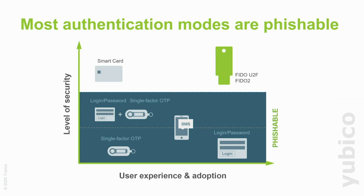From a zero-trust perspective, FIDO flips the paradigm on authentication. In previous models, the enterprise had primary responsibility for storing the credential itself. With FIDO, the private key is now held within the device — the authenticator. In this case, a security key like a YubiKey would have the private key, while a unique public key is given out to the company for them to store and manage. The private key is no longer in the hands of the enterprise, which provides a level of security they don't have to worry about as much. Obviously they still need to manage the public key and keep it properly secured, but if it's lost or stolen, it doesn't provide any real value to attackers because they don't have the private key.